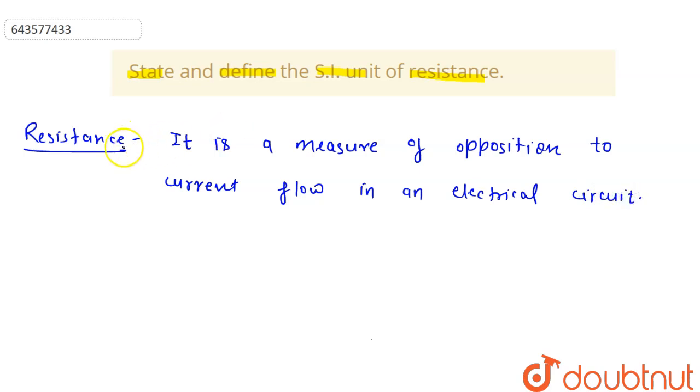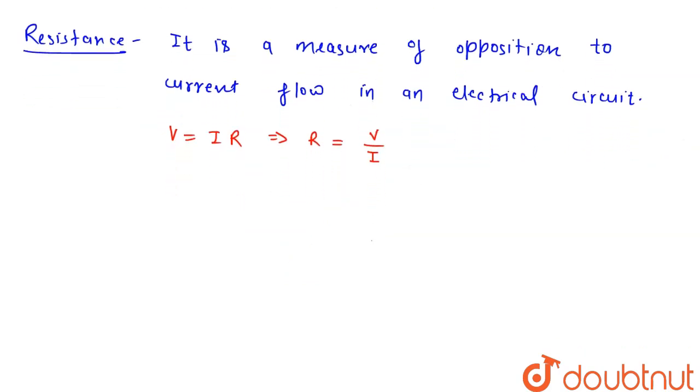Resistance is a measure of opposition to electric current flow in an electrical circuit. Now according to Ohm's law we know that V equals I R. So from here R will be equals to V upon I.